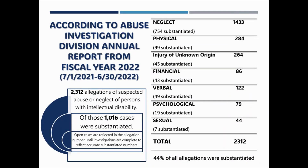Here on the screen are the allegations of abuse and neglect reported in fiscal year 2022. As you can see, there were over 2,000 allegations of abuse and neglect last year. Of those 2,312 allegations, 1,016 cases were substantiated — that is a 44% rate of substantiation. The list on the right-hand side further breaks down how many allegations were reported for each type of abuse and neglect and how many were substantiated. These statistics reflect the numbers for the state of Connecticut, public and private sector, for people with intellectual and developmental disabilities, as provided by the Division of Investigation within DDS for fiscal year 2022. Please note that an open case still being investigated is included in that allegation number.